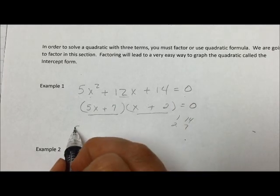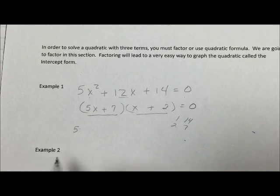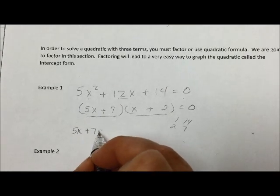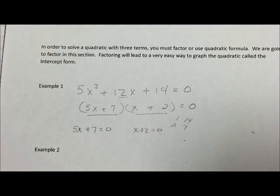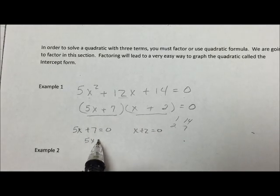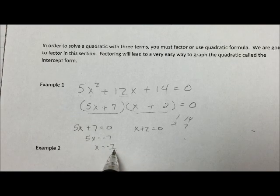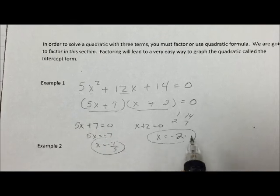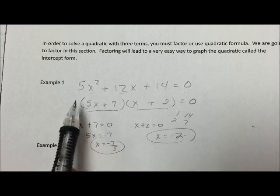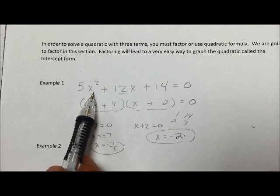So that means that 5x plus 7 equals zero, or x plus 2 equals zero. So 5x equals negative 7, so x equals negative 7 fifths, or x equals negative 2. These are the only two numbers that will work for x in this equation.